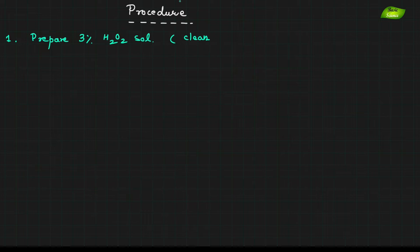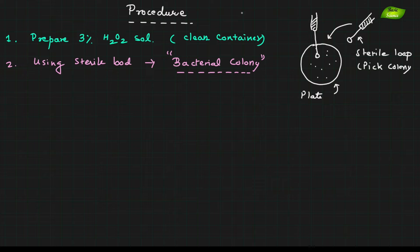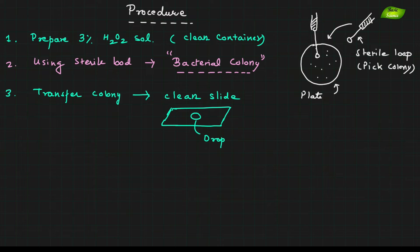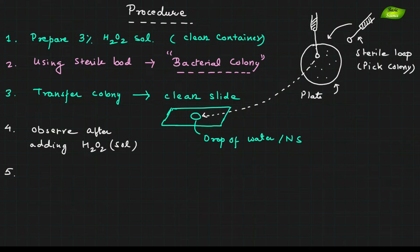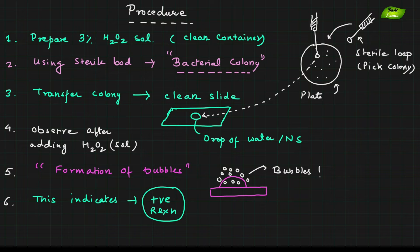Now let's move on to the procedure. Step one is preparation of a 3% H2O2 solution, which should be prepared in a clean container. Step two is using a sterile loop to pick up bacterial colonies from a plate. Step three is to transfer the colony onto a clean glass slide with a drop of water or normal saline. Then add H2O2 solution and observe for bubble production. In both orders of addition, bubble formation indicates a positive reaction — the sample is positive for catalase production.